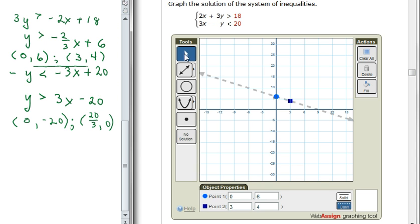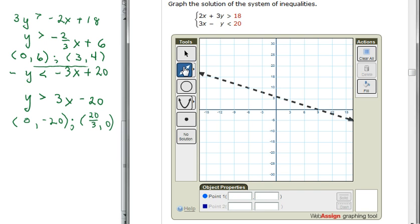So choosing the line tool, I'm going to put in 0, negative 20, and also twenty-thirds, 0. And then choose dash for that as well.